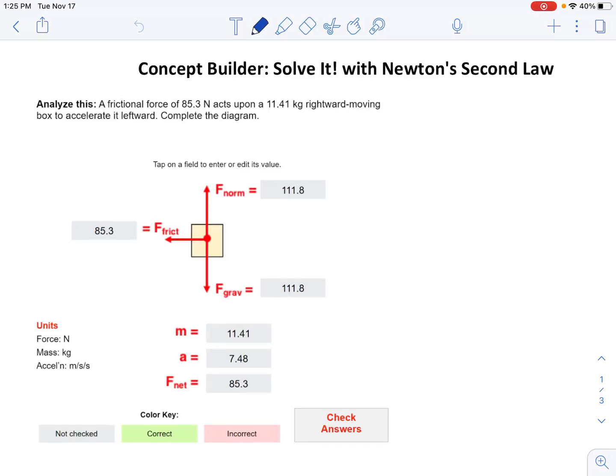In this case, what we want to do is calculate everything. We knew in the beginning that you had 85.3 Newtons of frictional force and the mass was 11.41 kilograms. Okay, so you got that right there.